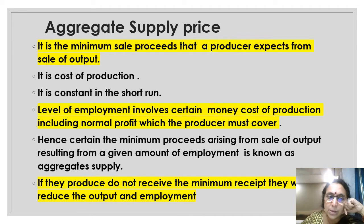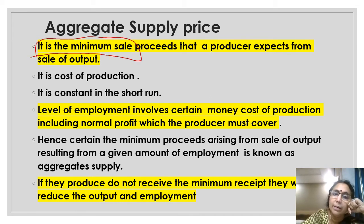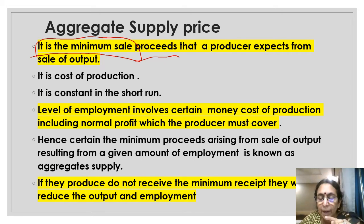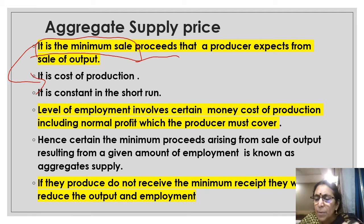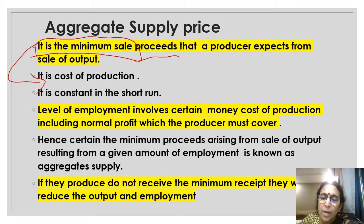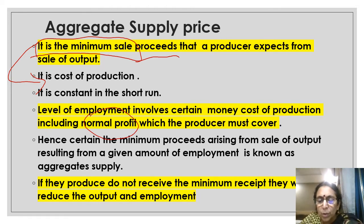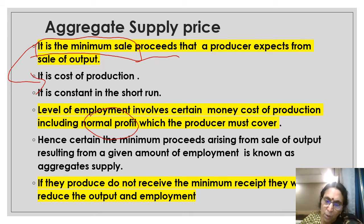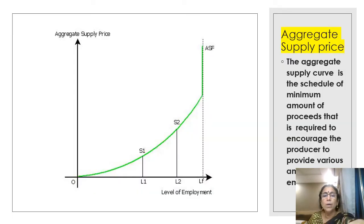Aggregate supply is just the opposite of aggregate demand. It is the minimum sale proceeds that the producer is expecting from the sale of output. That minimum is nothing but the cost of production. When a producer is not able to cover the cost of production, he will not continue production or will reduce output. The cost of production includes normal profit, because without normal profit, no producer is interested in continuing production. So aggregate supply price is the minimum sale proceeds, which equals the cost of production.